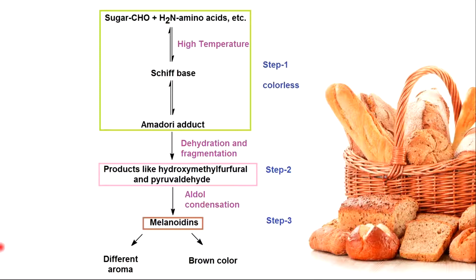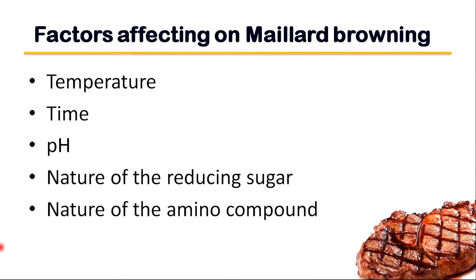I have mentioned these three steps in detail in the description. The Maillard product mixture formed is a function of temperature, time, pH, the nature of the reducing sugar, and the nature of the amino compound, for the following reasons.